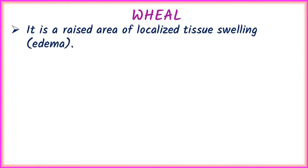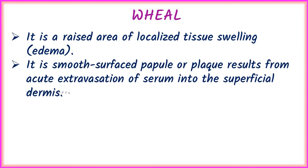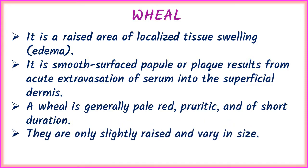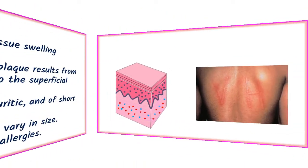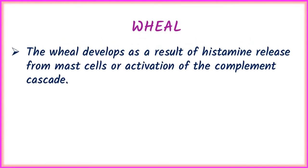The next terminology is wheal. It is a raised area of localized tissue swelling or edema — a smooth-surface papule or plaque resulting from acute extravasation of serum into the superficial dermis. A wheal is generally pale red, pruritic, and of short duration. They are slightly raised and vary in size, most commonly seen in persons with allergies. A wheal is a serum-filled papule or plaque that develops as a result of histamine release from mast cells or activation of the complement cascade.